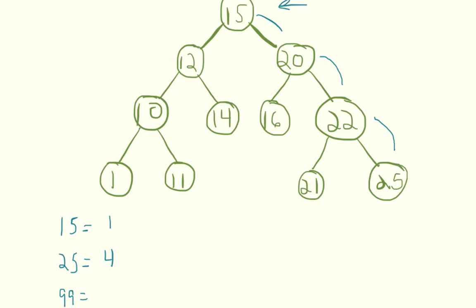99 would actually be the same number—it would only take us four steps because we would go from 15 to 20, 22, 25. We'd realize that 25 is the leaf and there is nothing greater than 25, and the system would return that 99 was not in the binary tree.